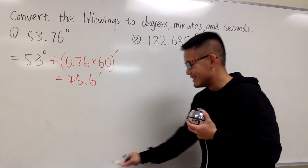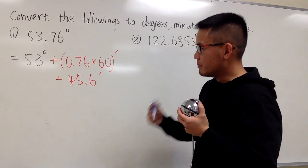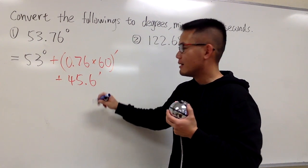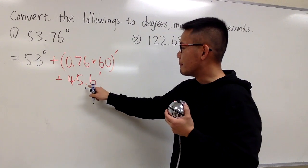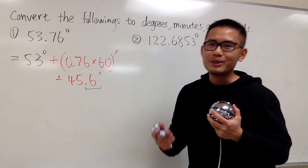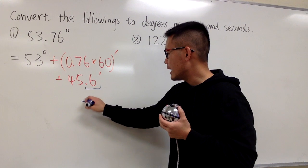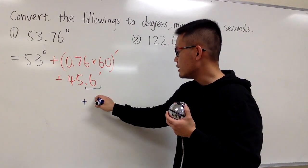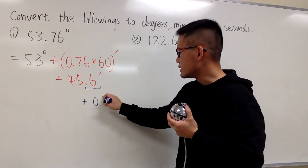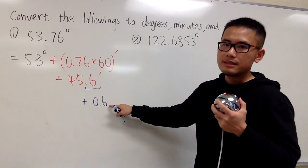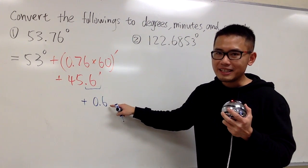In terms of the minute, 45 will be the minute. However, the 0.6 minute, we have to change that into seconds. So similarly, we'll just write this as we add it with, for this part only, I'll put this down at 0.6. This is still in the minute. And to change that into seconds,